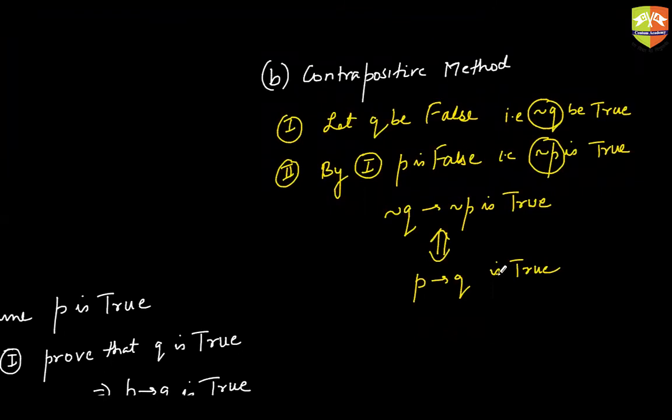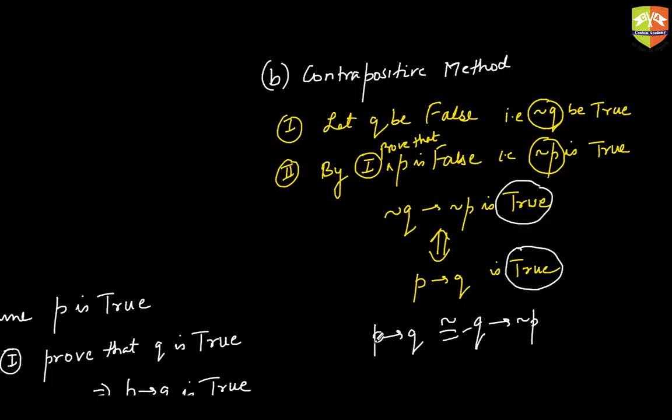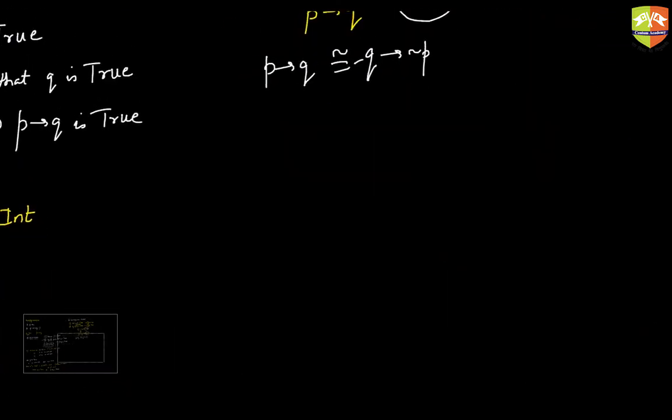One second, sir. Let Q be false. Prove that by using one, prove that by using the first assumption, prove that P is false. That means your negation P is true. That means you're proving that if not Q then not P. This is actually the contrapositive of this. We have seen from the truth tables that these two statements are logically equivalent to each other. Therefore, if this is true, this guy also has to be true because they follow the same truth tables. Correct? Now, where do we need a contrapositive approach?